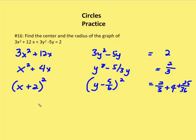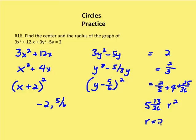From the standard form, we can easily identify the center as negative 2 and 5 sixths. Adding the right-hand side values together gives 5 and 13 over 36, which is r squared. Using a calculator, r is approximately 2.31. So the radius is approximately 2.31 and the center is at (negative 2, 5/6). We used completing the square to identify the center and radius.